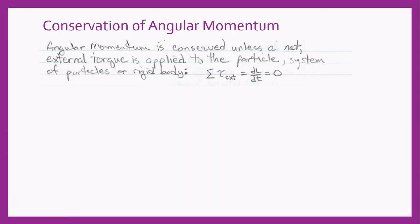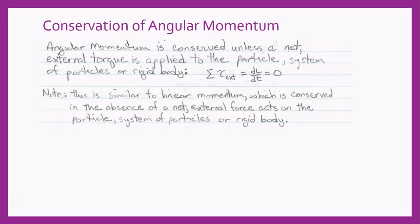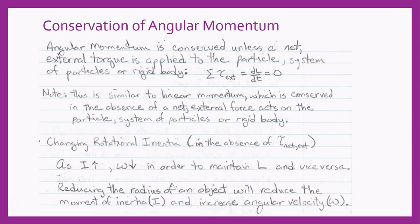Let's talk about conservation of angular momentum. Angular momentum is conserved unless a net external torque is applied to the particle, system of particles, or rigid body. This is one of the most important laws governing the motion of objects anywhere in the universe, similar to conservation of linear momentum in the absence of a net external force. If the rotational inertia of an object increases, it must rotate more slowly to maintain constant angular momentum, and conversely, if rotational inertia decreases, the object spins faster. One way to change rotational inertia is to increase or decrease the radius.